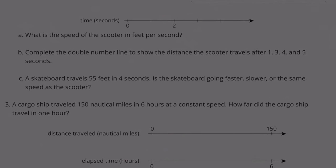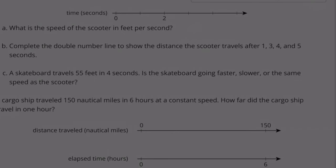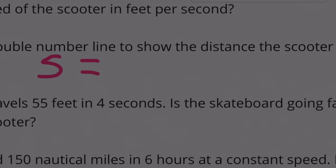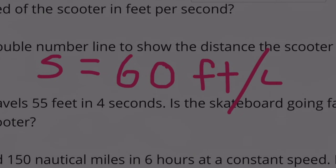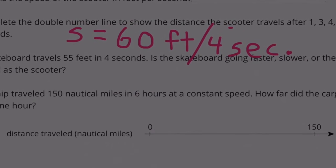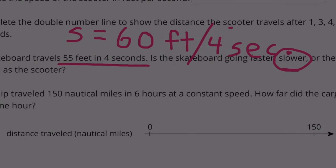Part C: A skateboard travels 55 feet in 4 seconds. Is the skateboard going faster, slower, or the same speed as the scooter? The scooter was going 60 feet in 4 seconds, and the skateboard is traveling 55 feet in 4 seconds. So the skateboard is not going as far — 55 is less distance than 60 — so the skateboard is going slower than the scooter.